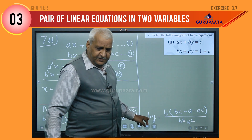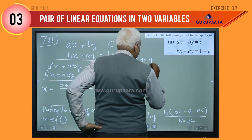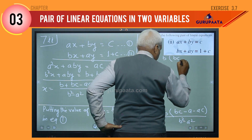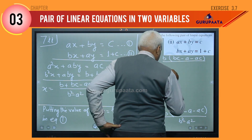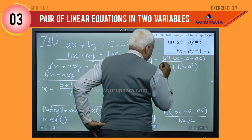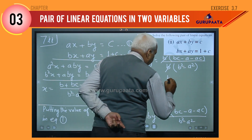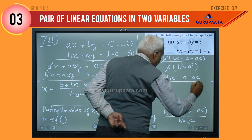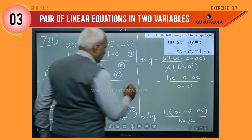The coefficient B on the left transfers to the RHS, cancelling with the B factored out of the numerator. So y equals BC minus A minus AC divided by B² minus A².